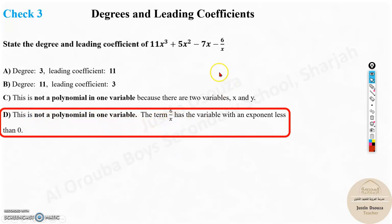Why? Because to be a polynomial, you need to have powers greater than or equal to 0. So this is not a constant. The power, if you bring it up, it'll be x to the power minus 1, isn't it? It's a negative power. So the exponent, the power, the variable is having less than 0. So this is not a polynomial in one variable.